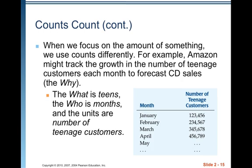When we focus on the amount of something, we use counts differently. For example, Amazon might track the growth in the number of teenage customers each month to forecast CD sales. The why is to forecast CD sales. The what is teens, the who is months, and the units are number of teenage customers. So for each month, one of the variables is a count.